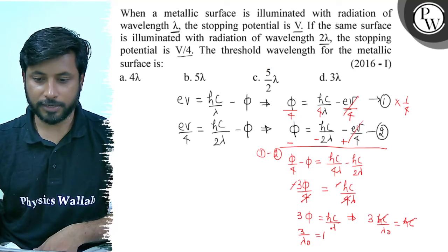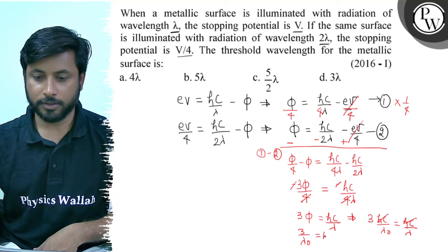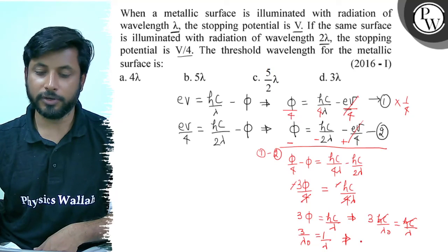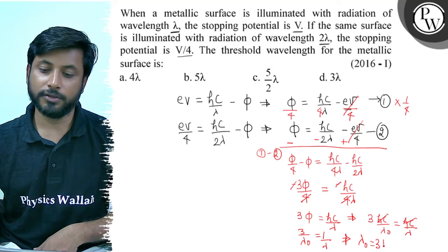hc cancels out, so 3 by lambda not equals to 1 by lambda. Cross multiply and we get lambda not equals 3 lambda.